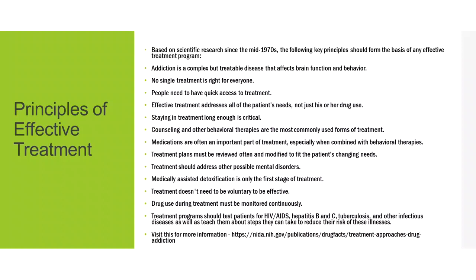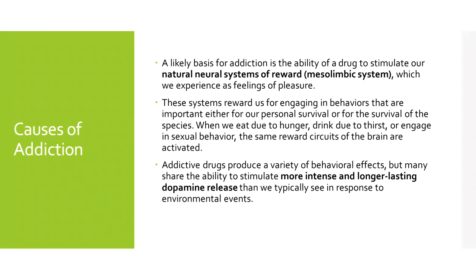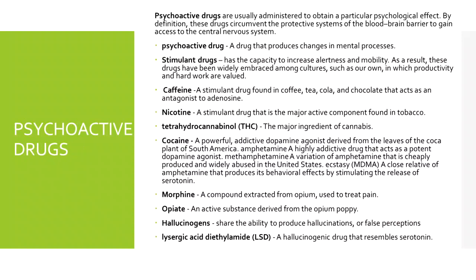Principles of effective treatment: there is an intervention plan needed, based on the individual client's case. Treatment plans vary, but there are universal treatment plans for all people considered to be addicts. A likely basis for addiction is the ability of a drug to stimulate our natural neural reward systems — the mesolimbic system — which we experience as pleasure. Addictive drugs stimulate more intense and longer-lasting dopamine release than we typically see in response to environmental events.